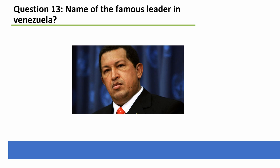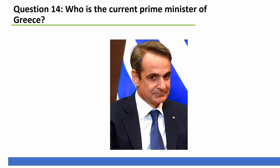Hugo Chávez was president from 1999 until his death in 2013, except for a brief period of 47 hours in 2002. 47 is the 15th prime number, a safe prime, and also a Lucas number. Another famous Lucas is Lucas Dimitrios Papademos, a Greek economist who served as the 12th prime minister of Greece. But who is the current prime minister of Greece? The answer is Kyriakos Mitsotakis.